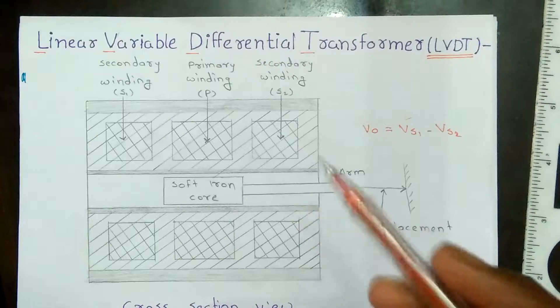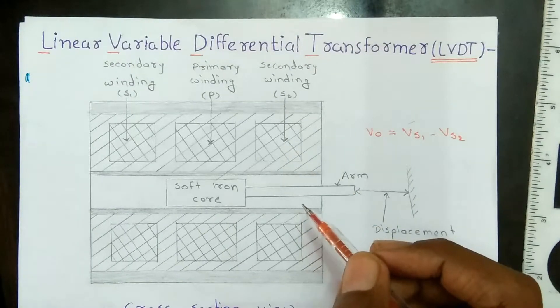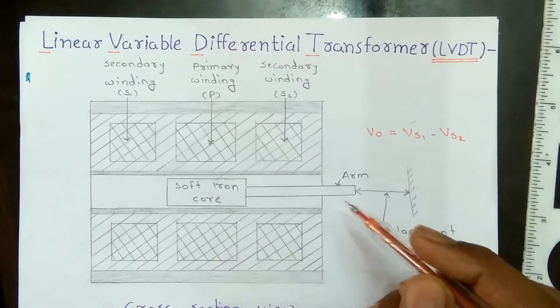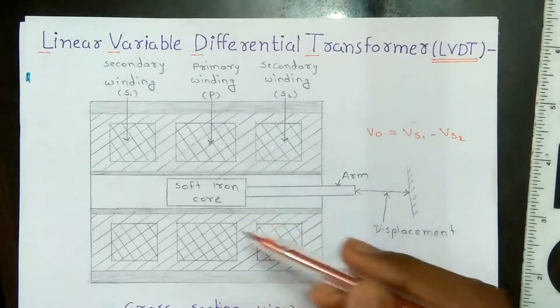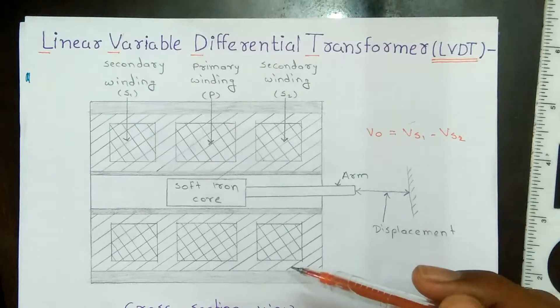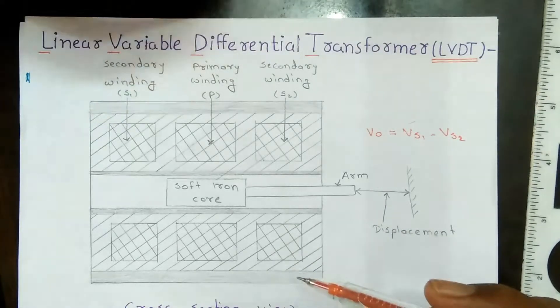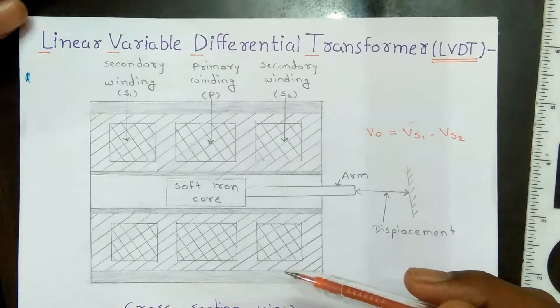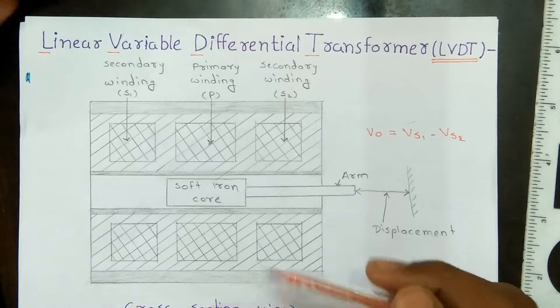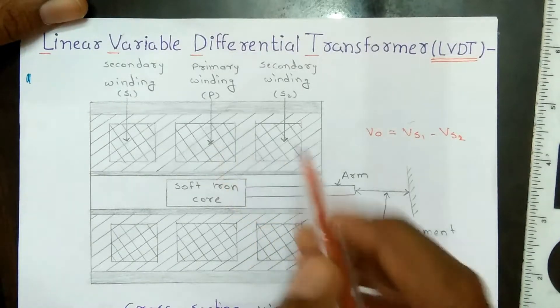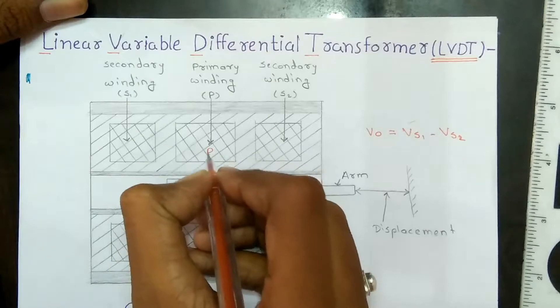It is used to convert linear motion into voltage or electrical signal. This is the constructional diagram of LVDT. Here the secondary windings are two, and the primary winding is P.